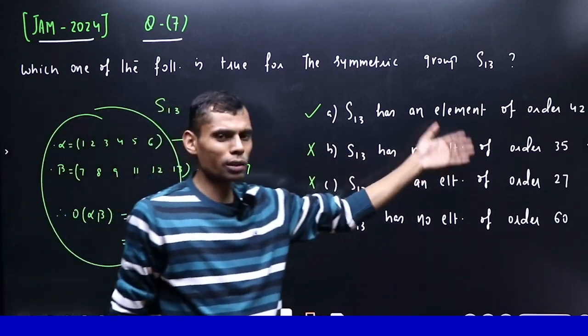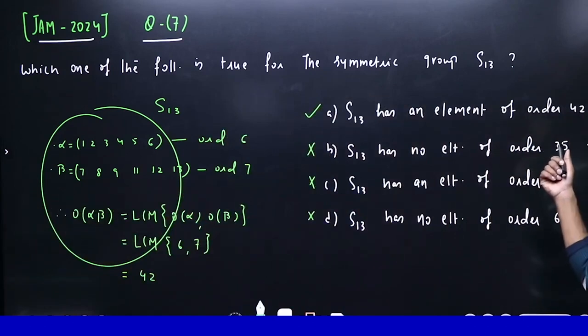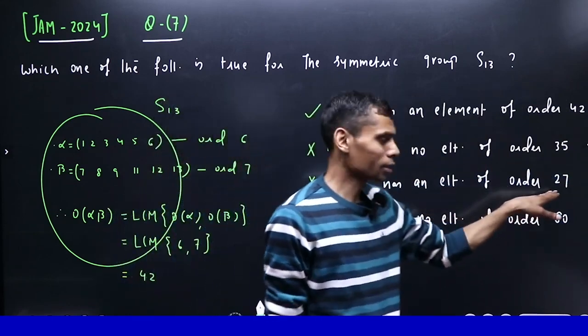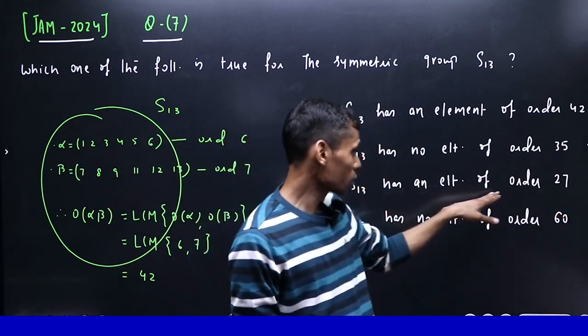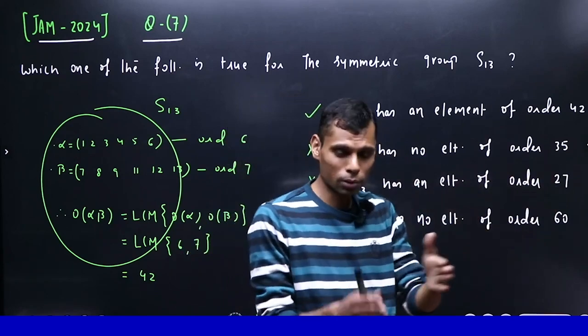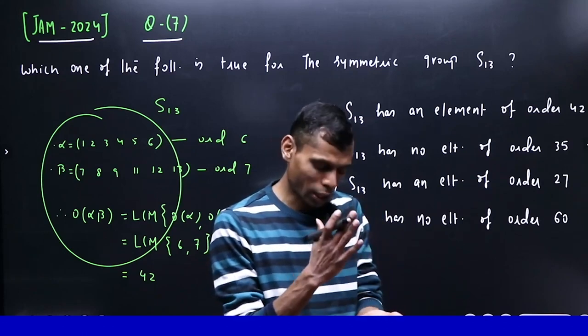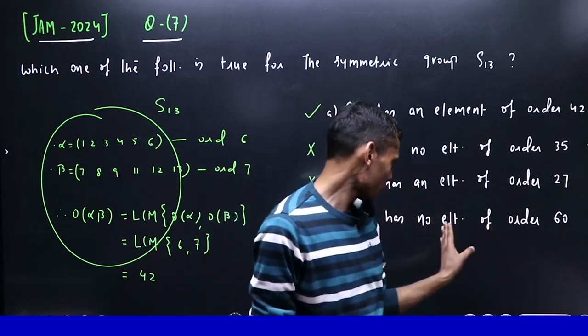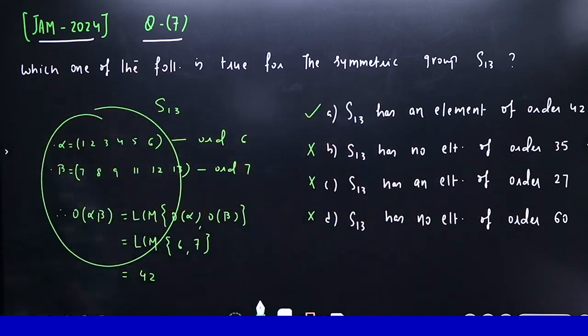You can verify the others: for element of order 35, take one of order 5 together with one of order 7 - we only have 13 symbols, so 35 would need 5 and 7 together, meaning 12 symbols. For element of order 27, if you decompose, you won't get it - you'd need three 9-cycles. Does S₁₃ have an element of order 60? No, it won't happen for the same reasons. Since this was single correct, we're done. Thank you very much. If you liked it, please comment.